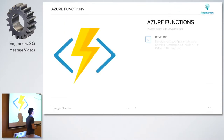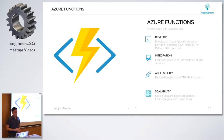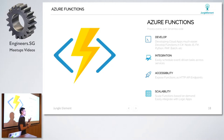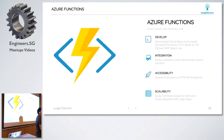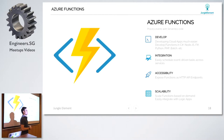Azure Functions - processing events with serverless code - has basically four tiers. One is develop: you can develop code much faster, and not only in C#. If you think about Windows Azure, you might think it's only C#, but that's wrong. You can code in C#, F#, PHP, JavaScript, batch file - you can code in different languages. Integration is much easier because you're integrating events together - event-driven tasks across different platforms and app services. You can expose HTTP endpoints from serverless functions out to backend services if needed, and you can scale your functions based on whatever execution is happening.